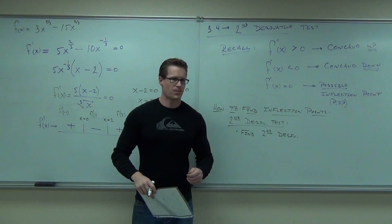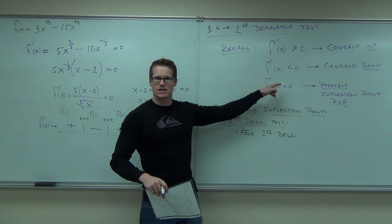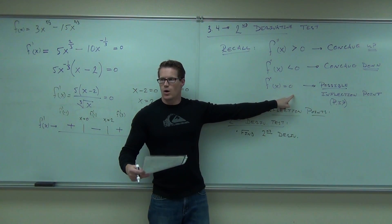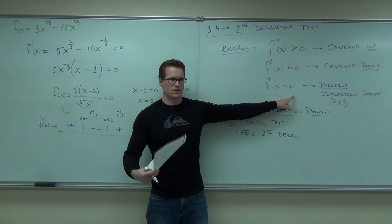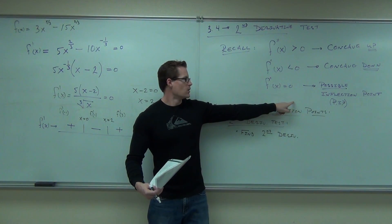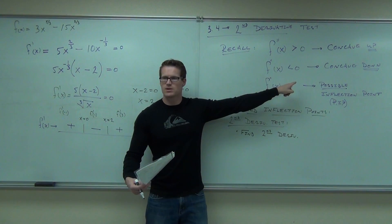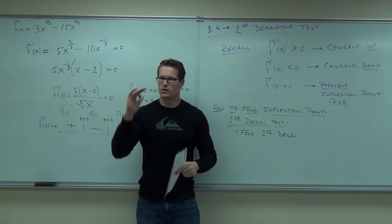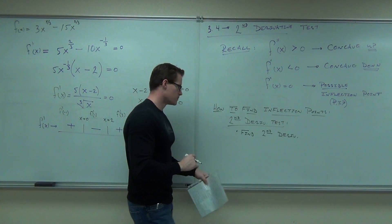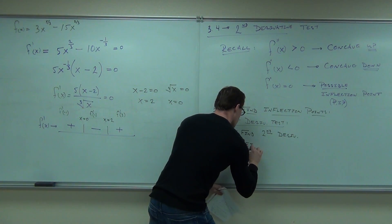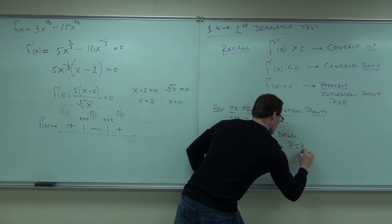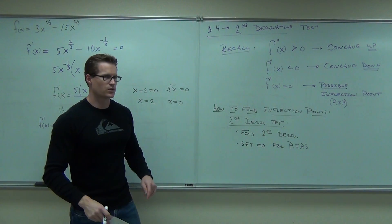Why are we looking for the second derivative? If you set the second derivative equal to zero and solve for it, you're going to get all the places where you could possibly change concavity. Where that equals zero, then you're going to test some intervals just like you did before. Where you're positive means you're concave up. Where you're negative means you're concave down. So you take the second derivative and set it equal to zero for your possible inflection points — your PIPs.